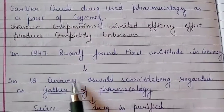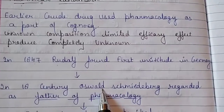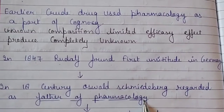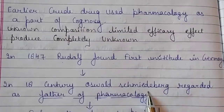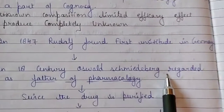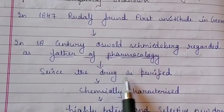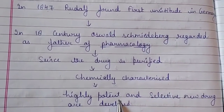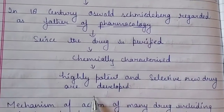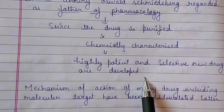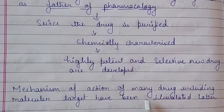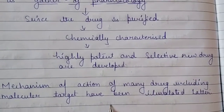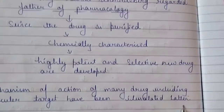In the 18th century, Oswald Schmiedeberg was regarded as the father of pharmacology. In this era, drugs were purified and chemically characterized. Highly potent and selective new drugs were developed, mechanisms of action were identified, and molecular targets of many drugs were isolated.